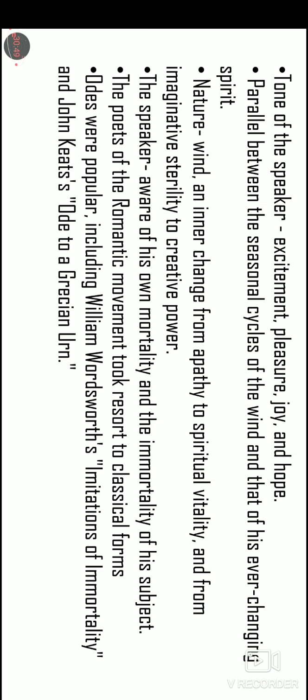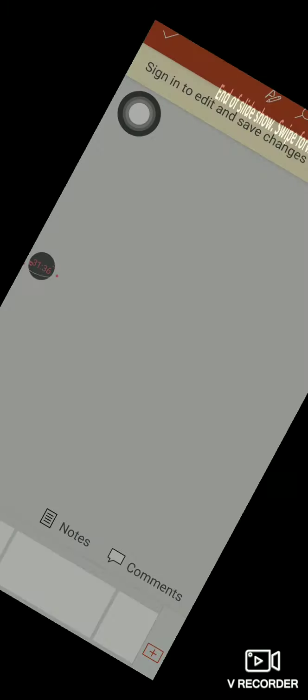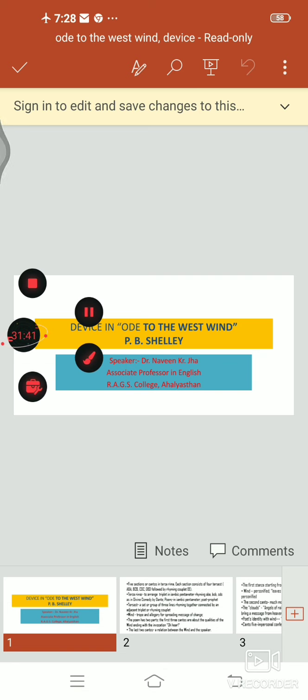The tone of the poem is full with excitement, pleasure, joy, and hope. There are many parallelisms — a parallel between the seasonal cycle of the wind and the ever-changing spirit. The wind and inner change from apathy to spiritual vitality is the purpose of the poem, and from imaginative sterility to creative power is the hidden idea. The speaker is aware of his own mortality and there is an awareness of the immortality of the subject he is treating. The poet is from the Romantic movement and has also taken resort to classical forms. We can talk about odes written by Wordsworth, 'Intimations of Immortality,' John Keats's 'Ode on a Grecian Urn' and so on. But this ode is a kind of classic example for a political subtext, and it is a very well-designed poem.